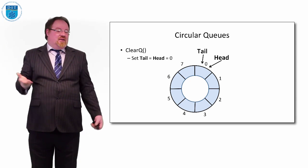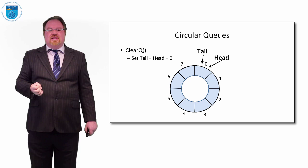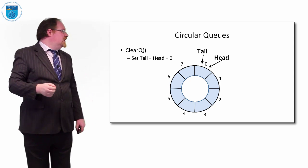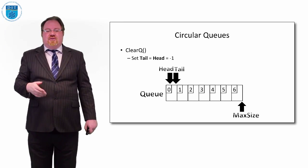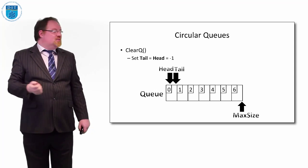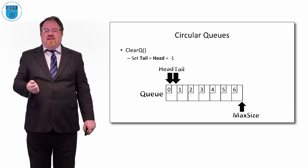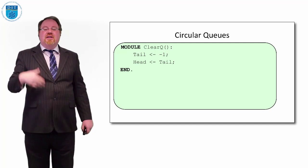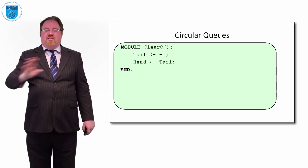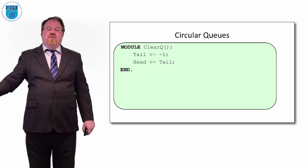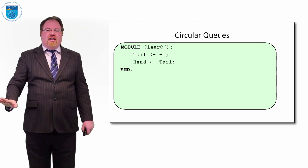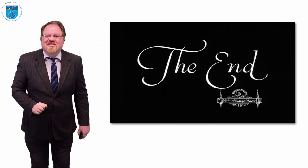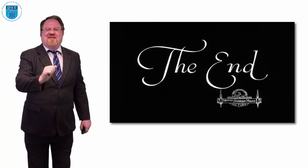How do we clear the queue? As long as head and tail are pointing to the same value, the queue is empty. So we set tail to minus one, then set head equal to tail. We've cleared the queue — it's pointing at no location. Thanks very much, that's circular queues — we'll see you on the next episode.